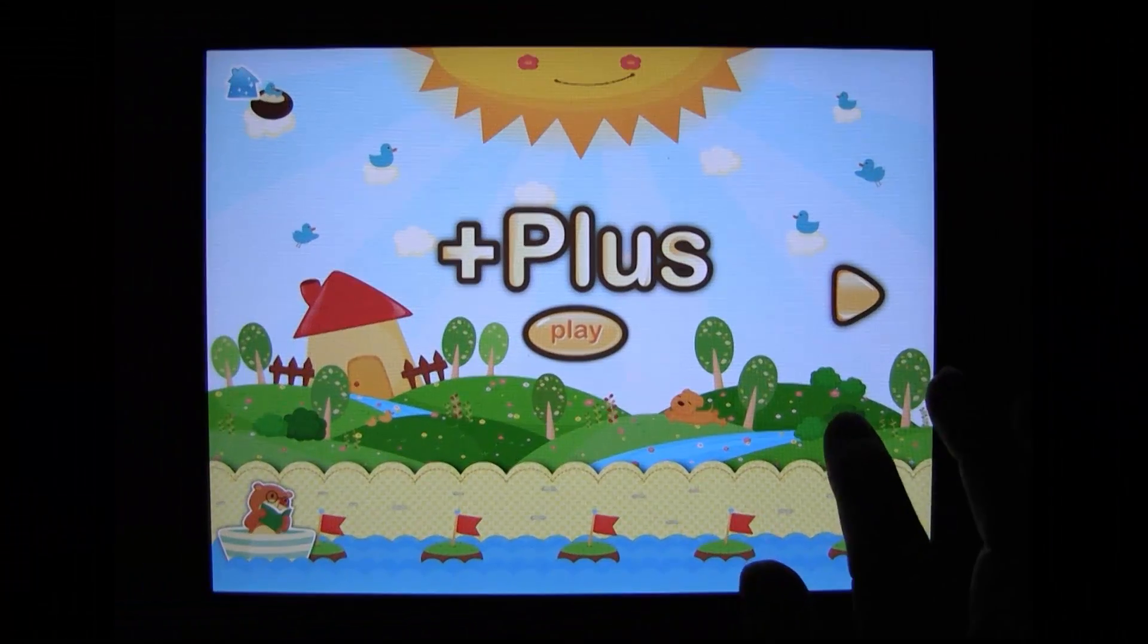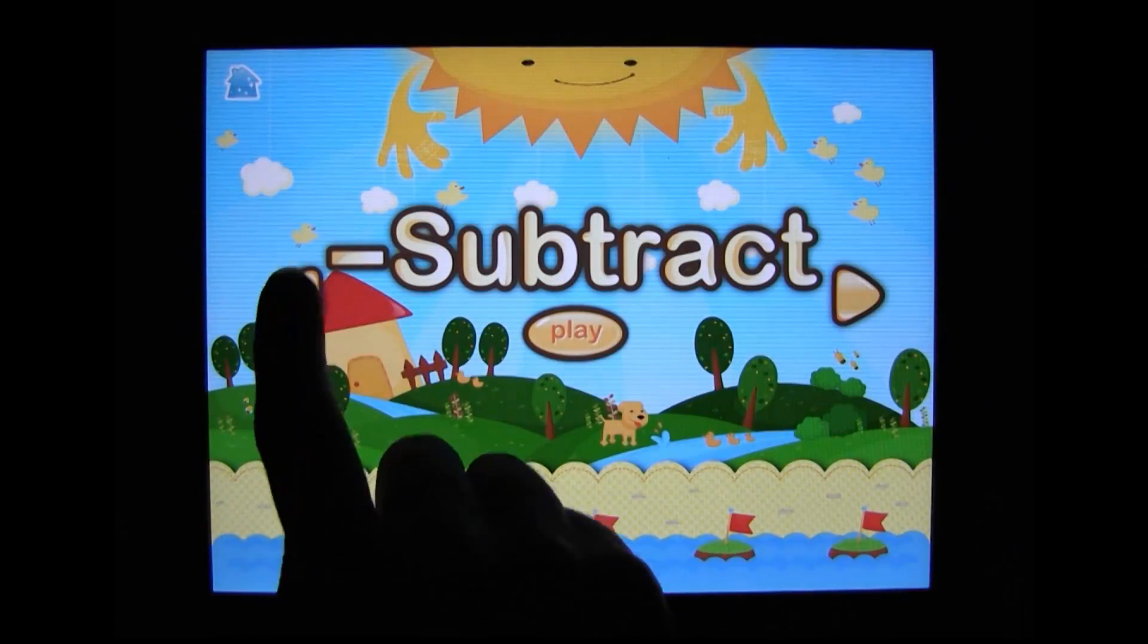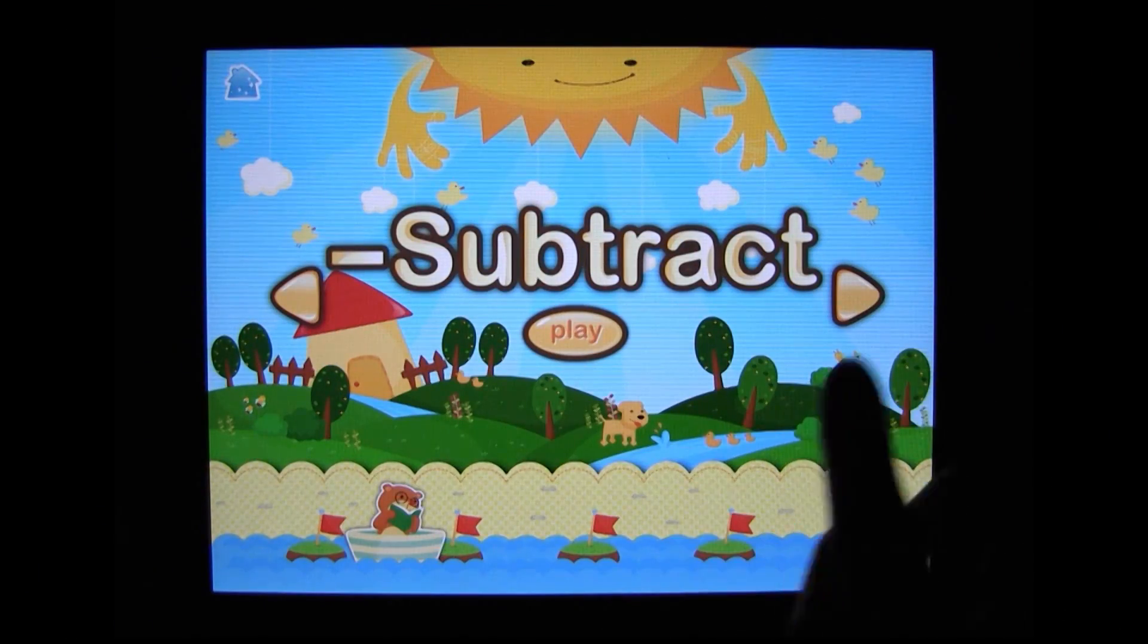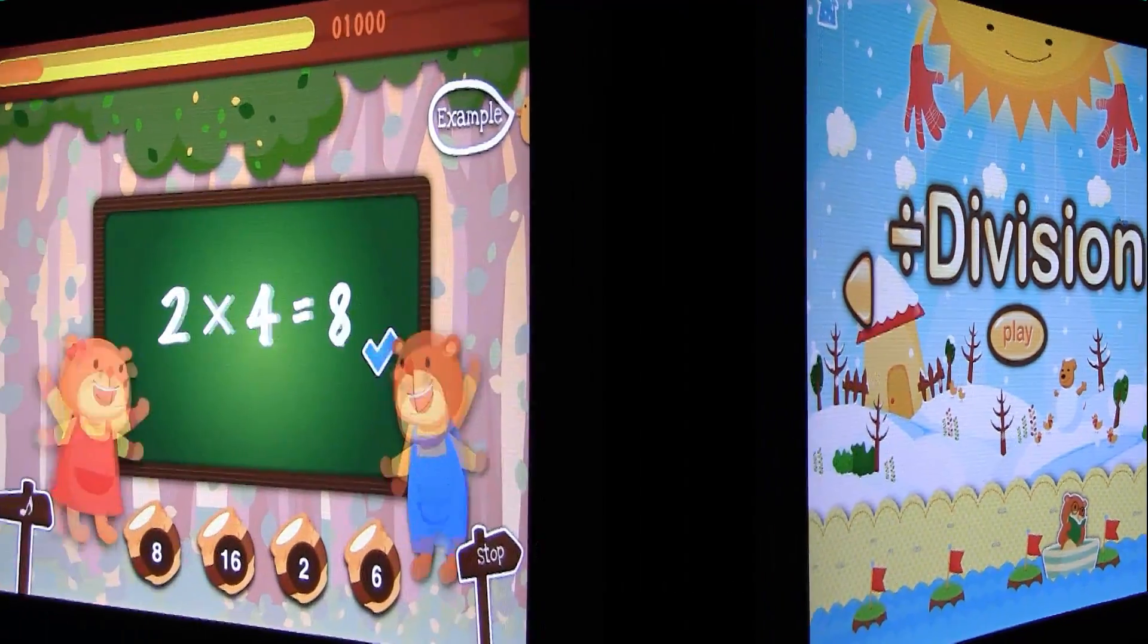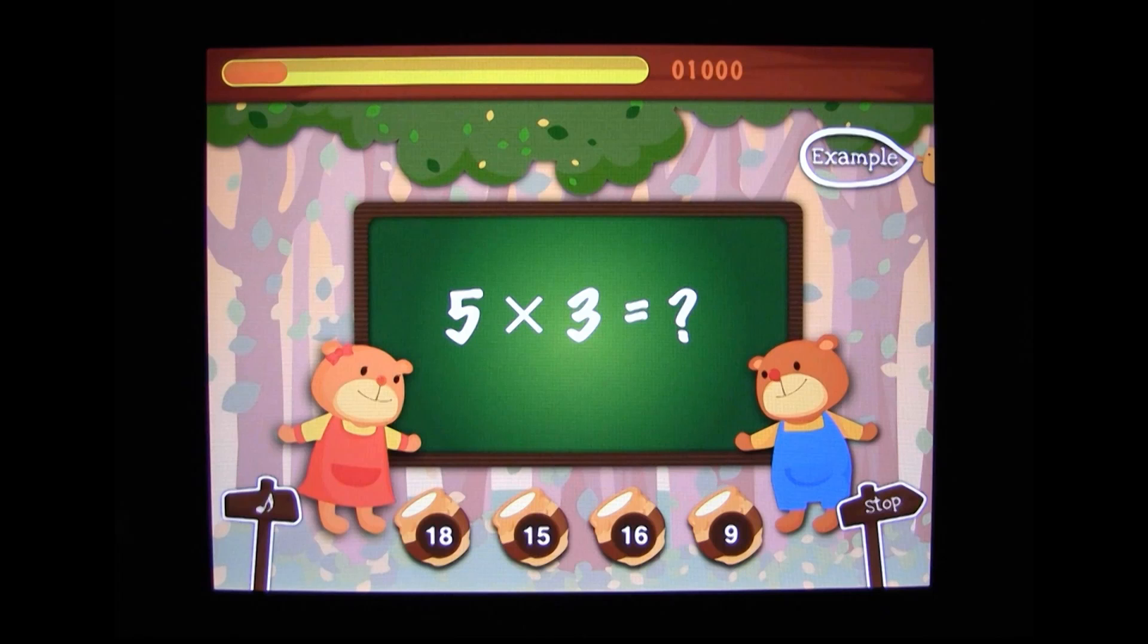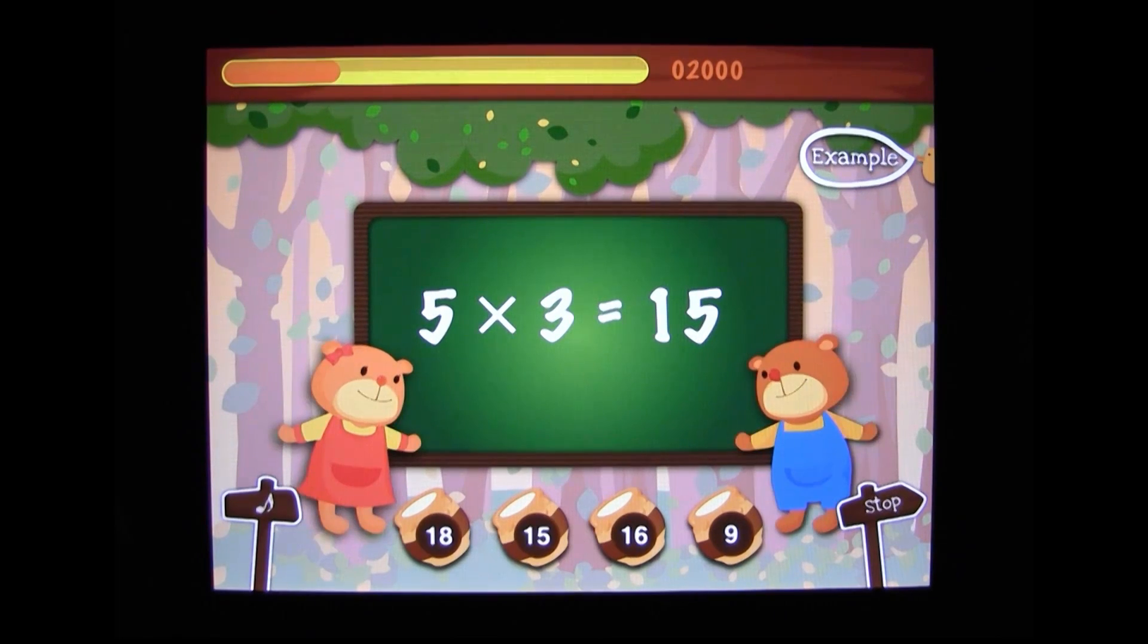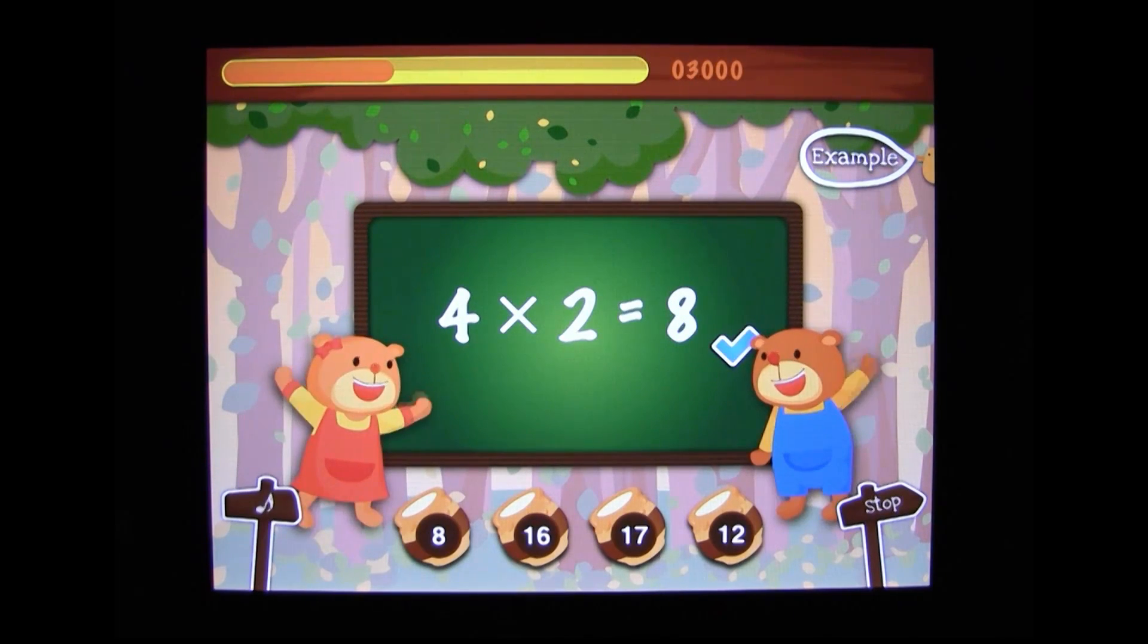The game couldn't be simpler. There are five game modes—addition, subtraction, multiplication, division, and a math mixture—and they all work the same. Problems appear on the screen along with four possible answers. You tap the right one to score points, you get smarter, and you flex your brain tissue.